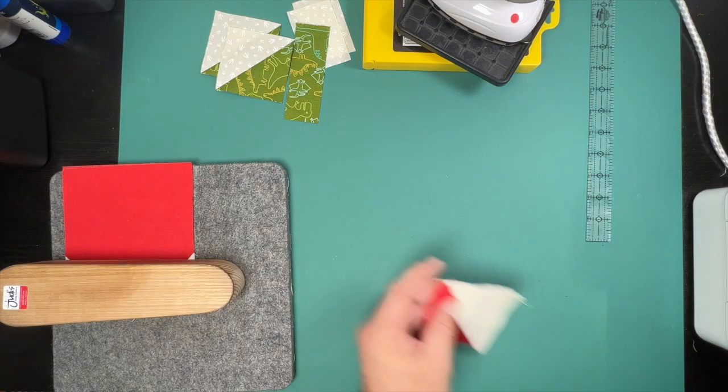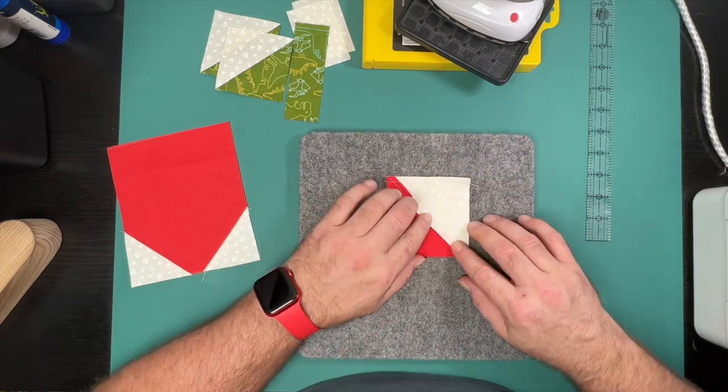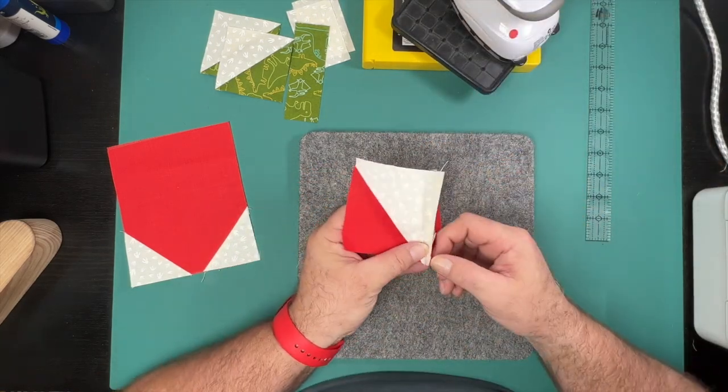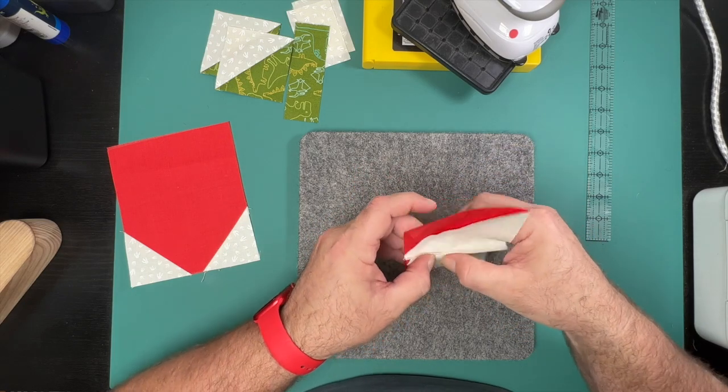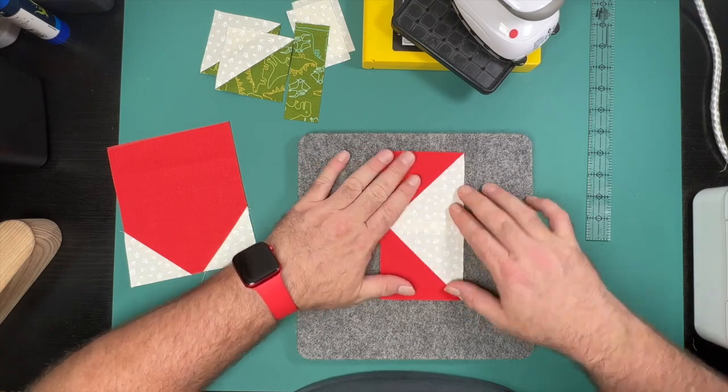Part of the reason we clipped our seam before was to make sure this nests and sews together nicely. It was also to help control the bulk so that we don't have four pieces of fabric coming together there. To further protect this and remove even more bulk, I am actually going to press this seam open.